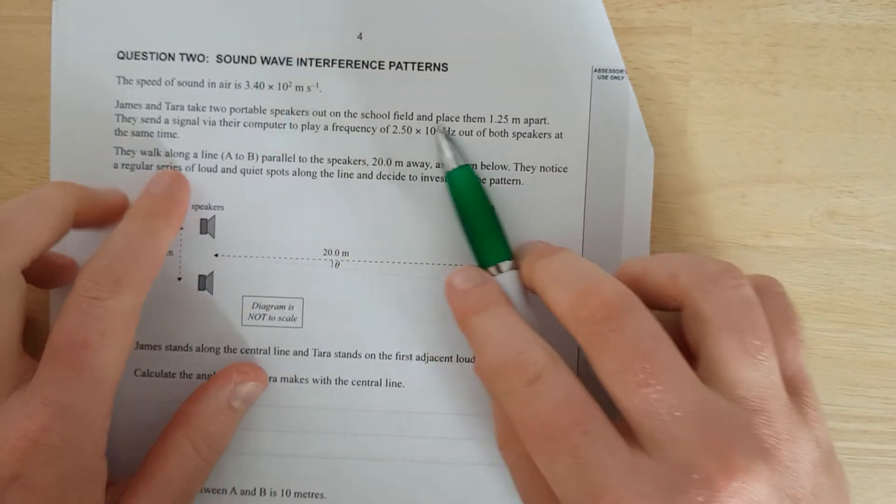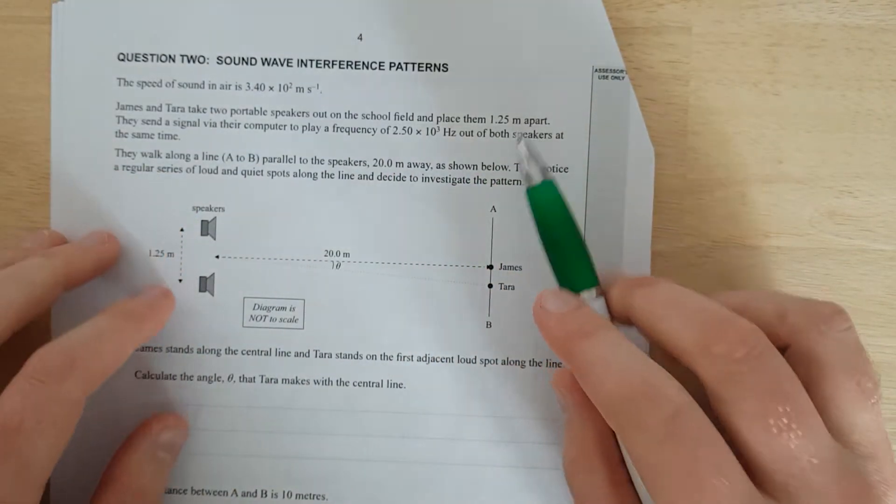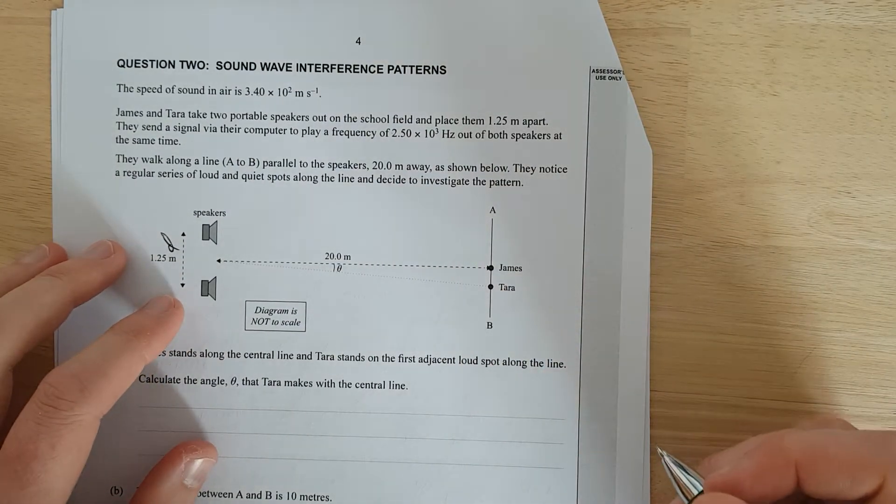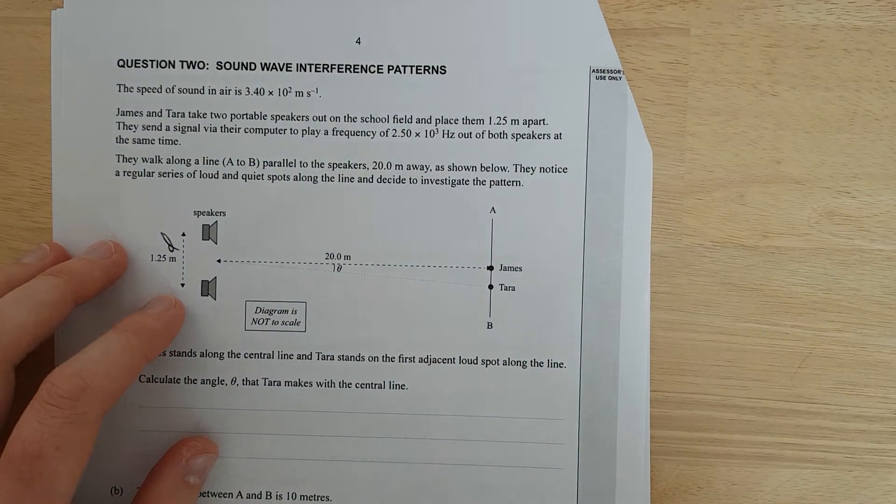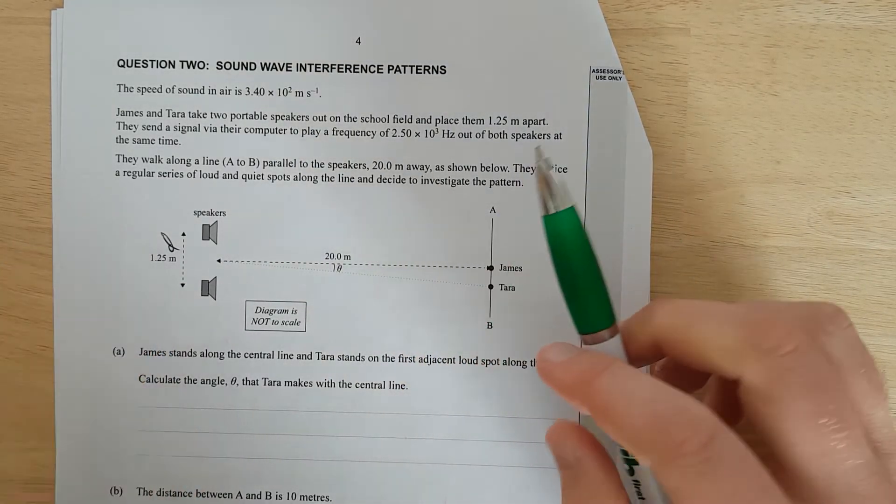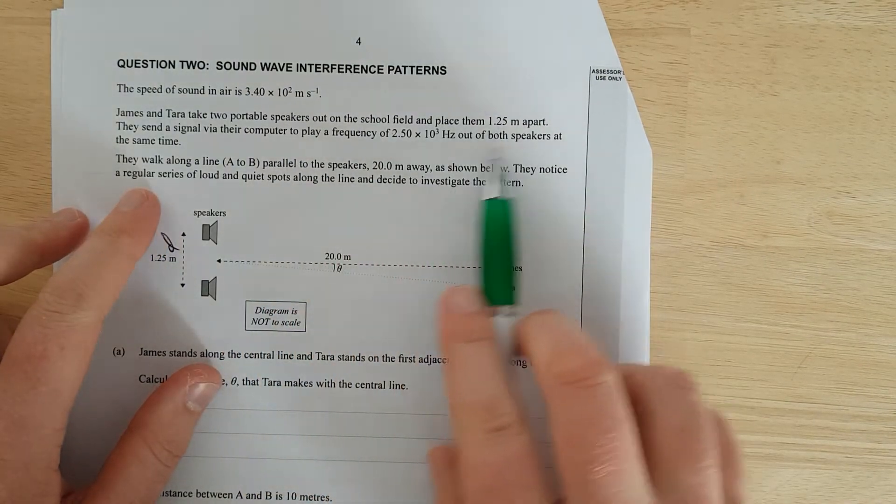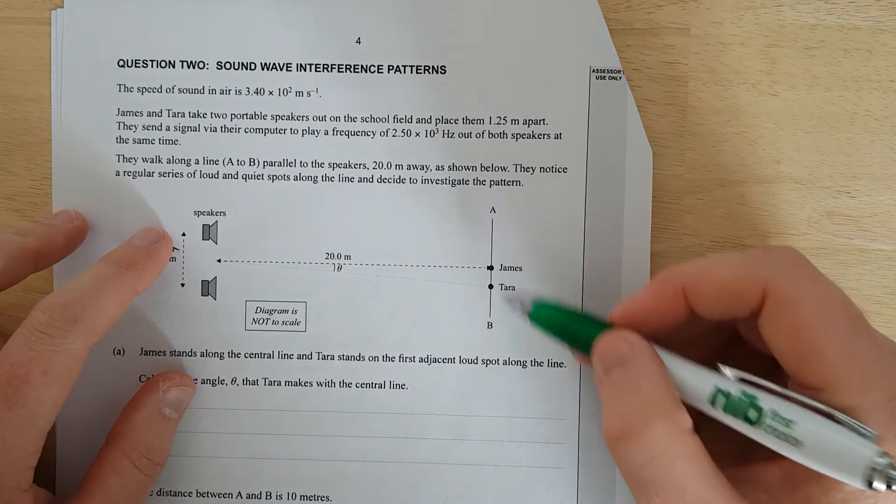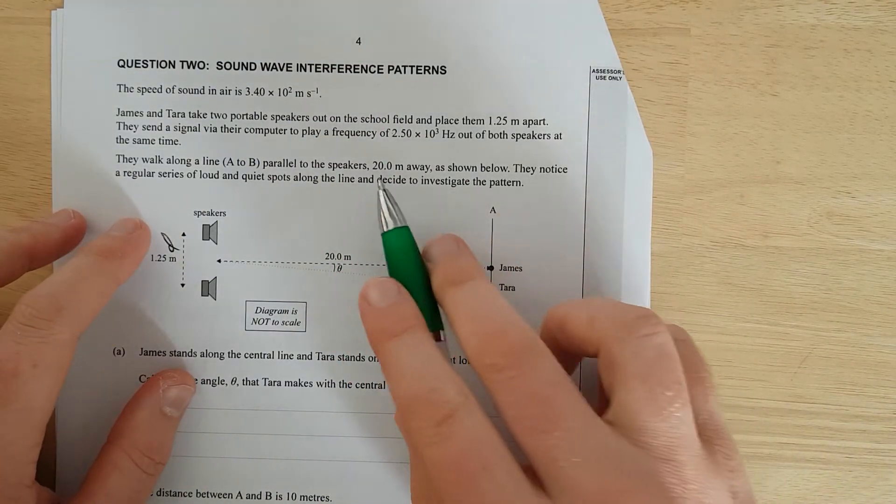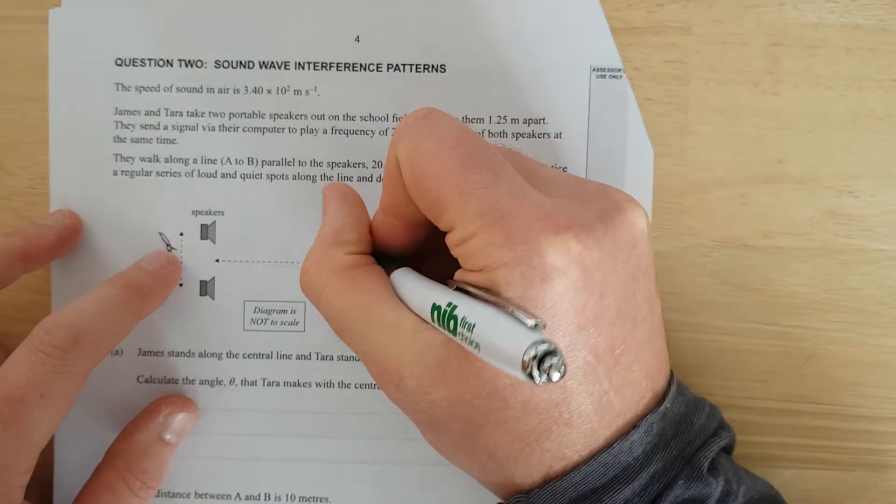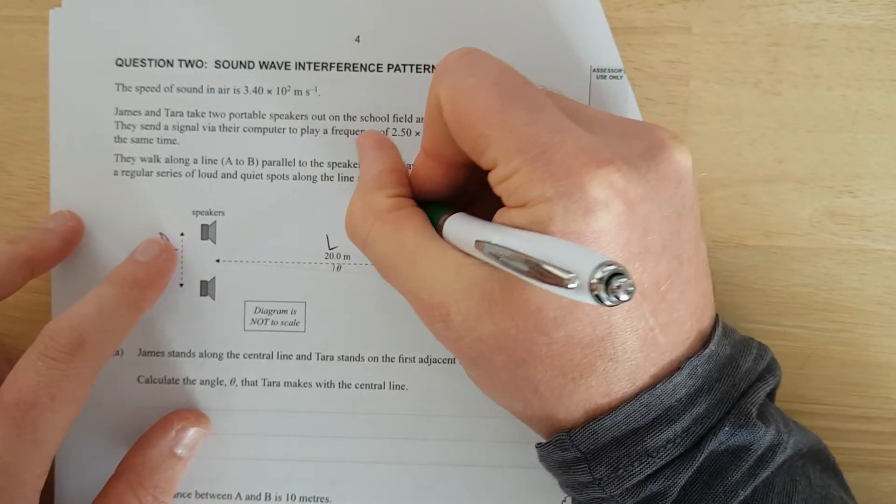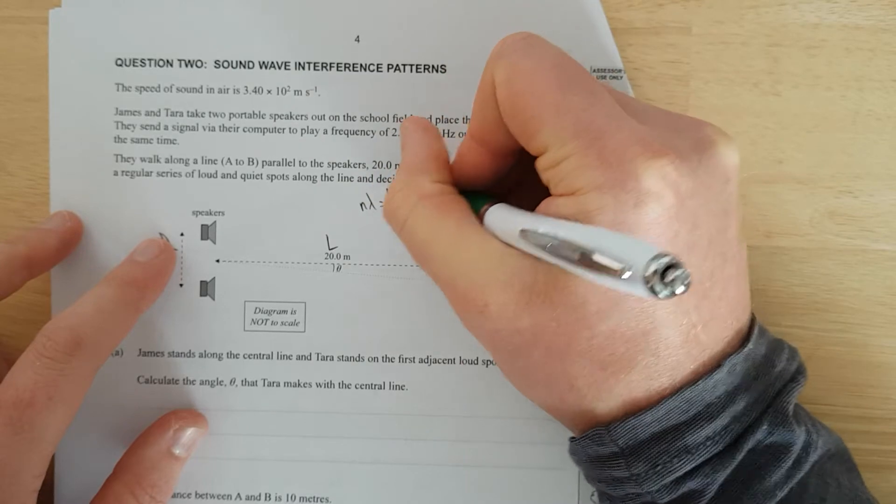Speakers out at the school field, place them 1.25 meters apart. So this is D, and that equation was m lambda equals D sine theta. I hope I've remembered that correctly. Yeah it is. They walk along the line AB, so they walk along this line parallel to the speakers, 20 meters away. So this is L for you guys.